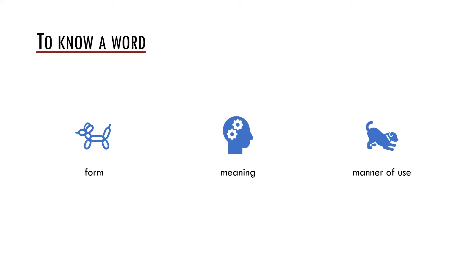First, let us think about what it actually means to know a word. This may not seem very complicated and we might just say that a person knows a word if he or she knows its form and meaning, or meanings, and also knows how to use it in an utterance. For example, the person might know the subcategorization frame of the word, its morphological characteristics and pronunciation.